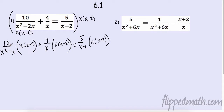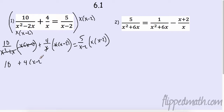When I multiply this, remember this is x times (x minus 2), so this cancels with this — everything cancels, so I have 10. Plus, in this case, my x cancels — see, it's nice when I write it all out — so I'm going to have 4 times (x minus 2). And then that equals — the (x minus 2) cancels — so 5 times x.